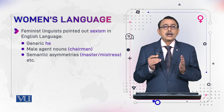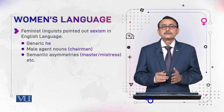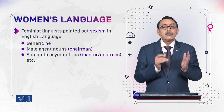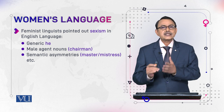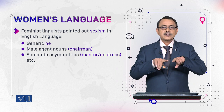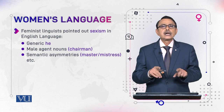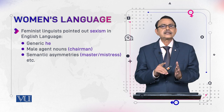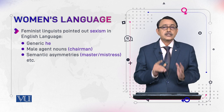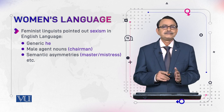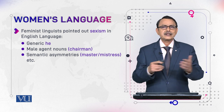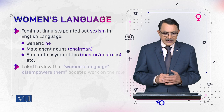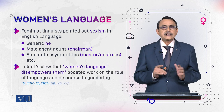Another issue is semantic asymmetry. When we talk about males we say 'master,' and for females 'mistress.' This division shows that one term refers to masculine and the other to feminine, and this creates asymmetry in the language.